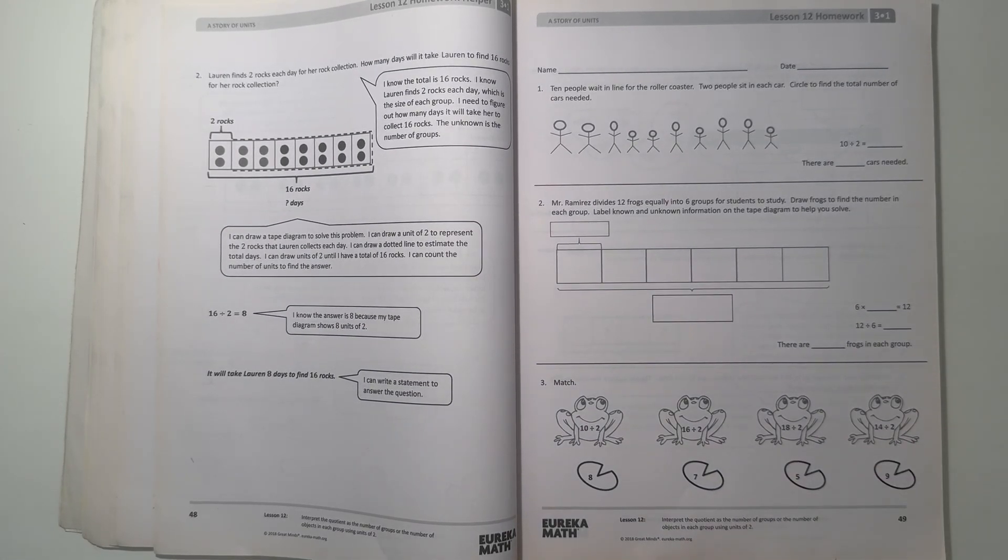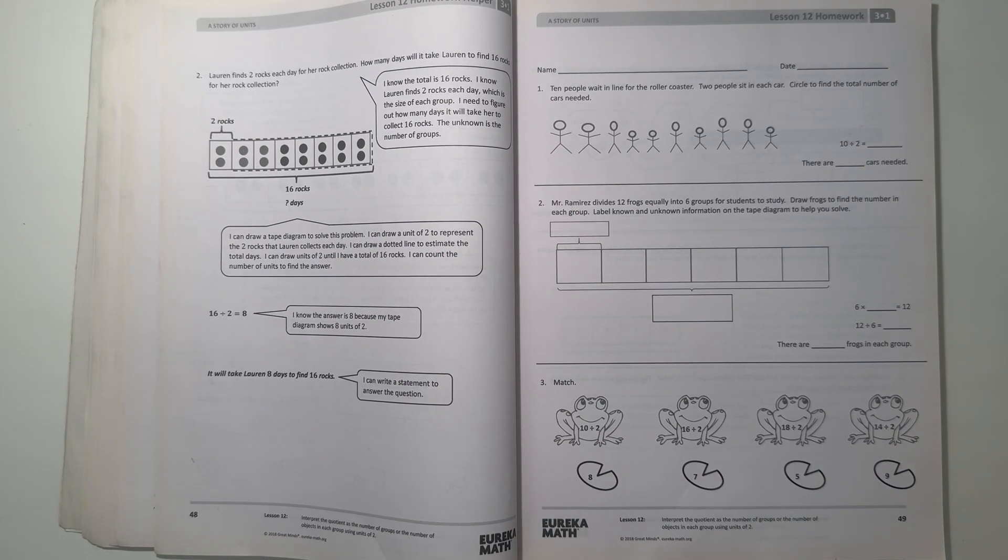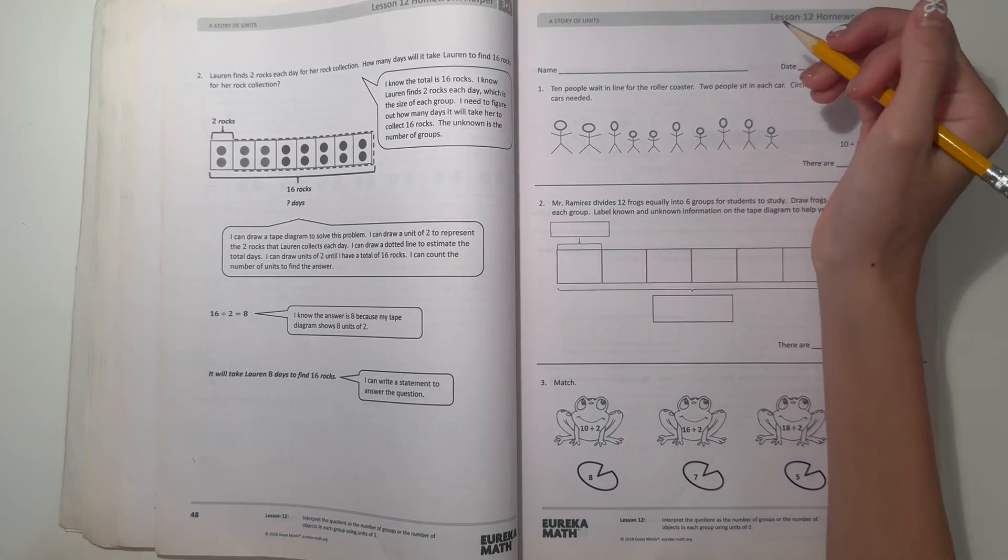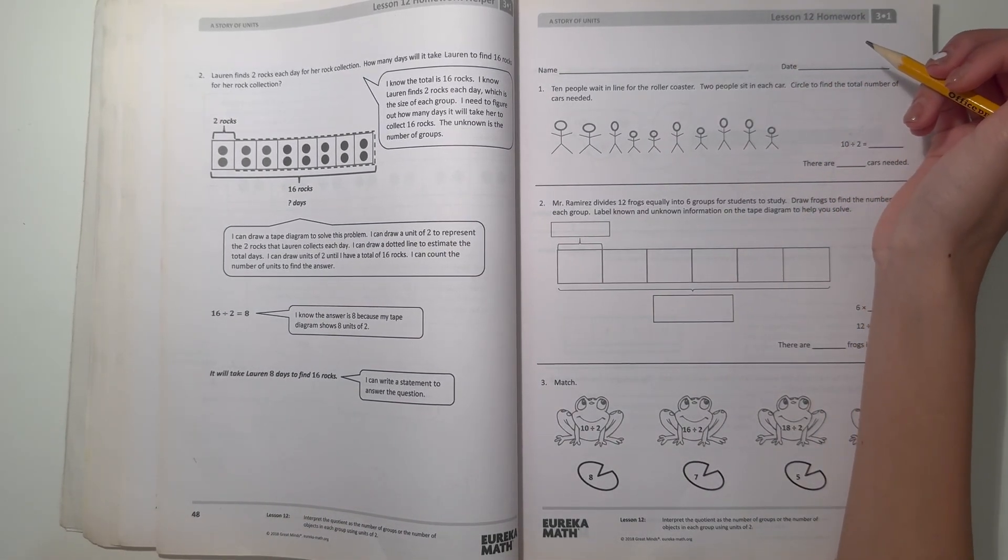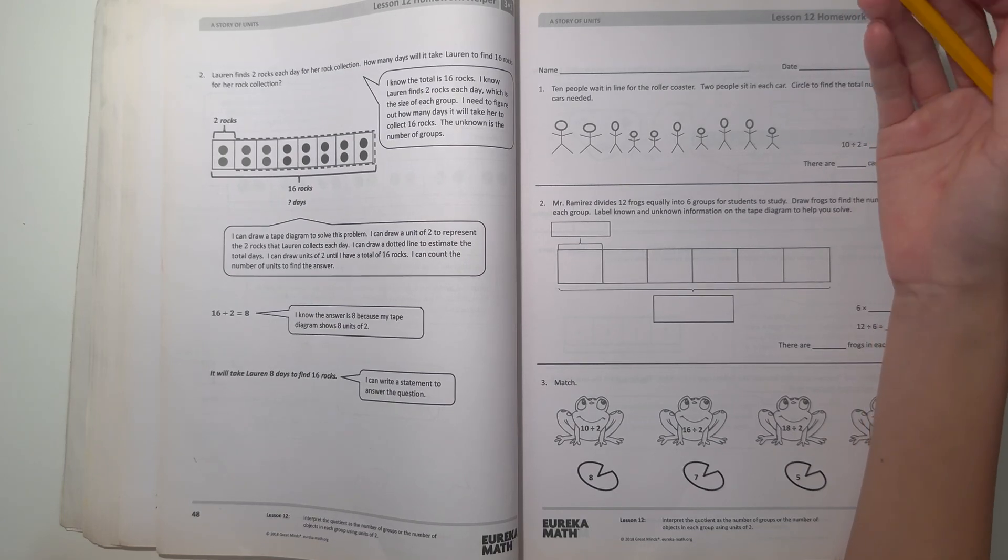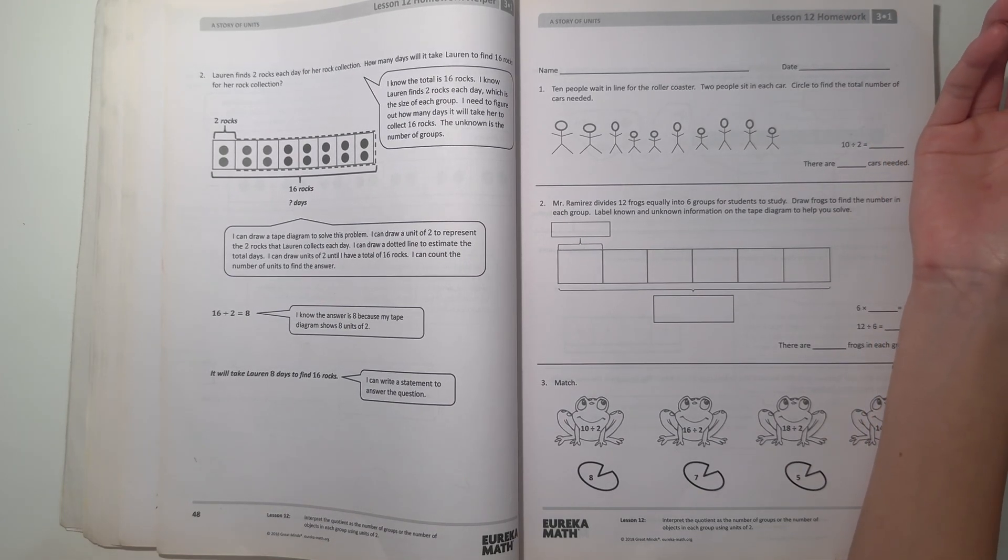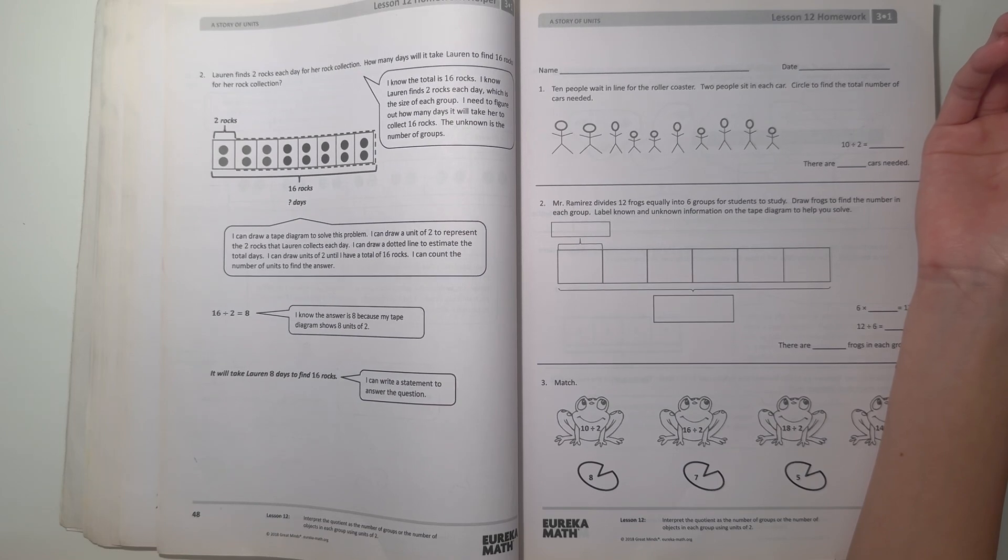Number 1, 10 people wait in line for the roller coaster. Two people sit in each car. Circle to find the total number of cars needed. Alright, so there's two people in each car, which means only two can fit in each car. So now we're circling to find how many groups, how many cars are needed.